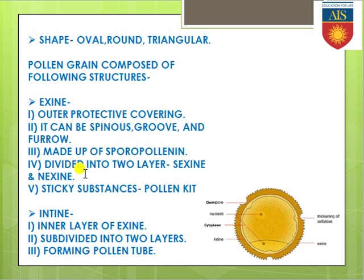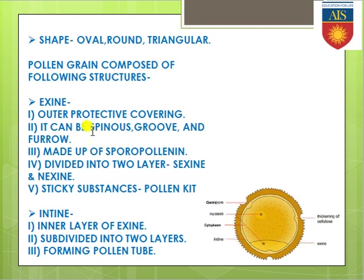The exine is the outermost protective covering, present for protection. It can be spinous, and it contains grooves or furrows, so due to the presence of these structures — spinous, groove, furrow — that outer layer gets protective. Keep it in mind that this exine layer is commonly made up of a specific protein known as sporopollenin.